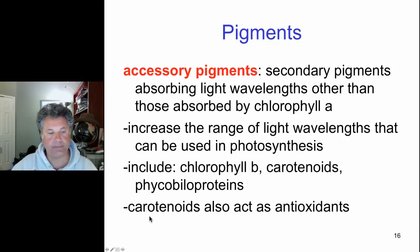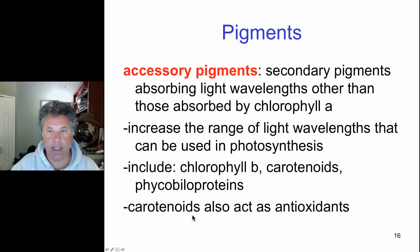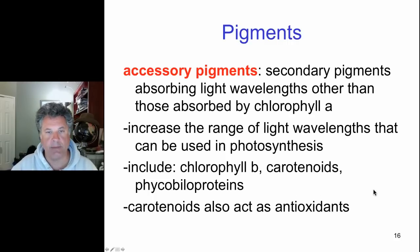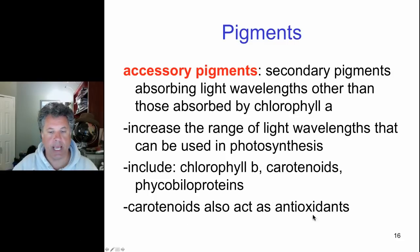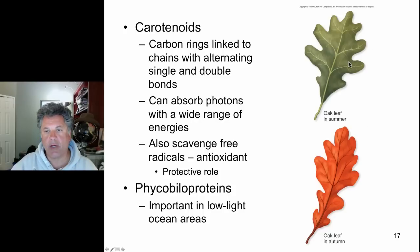Carotenoids get their name from carrots. Carrots are orange, and carotenoids are yellowish-orange in color, as opposed to the green chlorophyll pigments. Eating carrots is good for you because the carotenoids present in carrots act as antioxidants. Antioxidants remove reactive oxygen species from cells, and those reactive oxygen species can be very damaging. The carotenoids in the photosystems act as antioxidants as well as light-capturing photopigments.